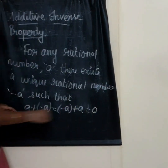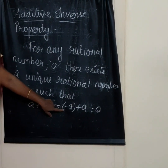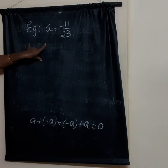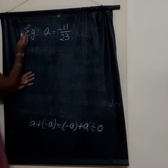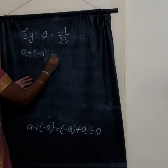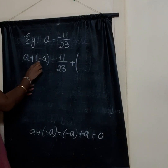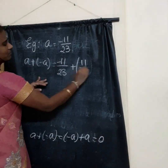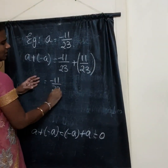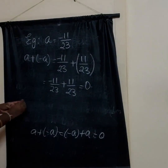Let's take A equal to minus 11 by 23. So the additive inverse of A is 11 by 23. A plus minus A gives us minus 11 by 23 plus 11 by 23, which equals 0.